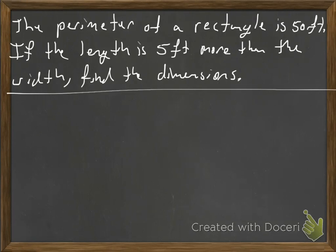We're going to look at the perimeter of a rectangle is 50 feet. If the length is 5 more than the width, find the dimensions. So what they want us to do is find what the length and the width is.